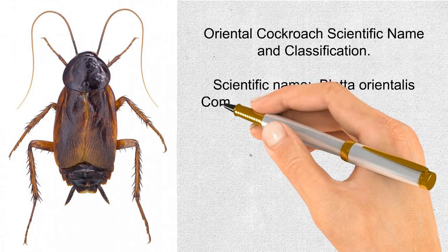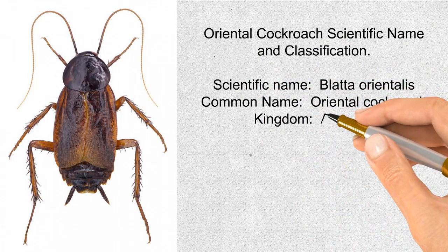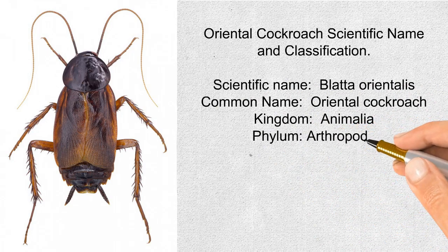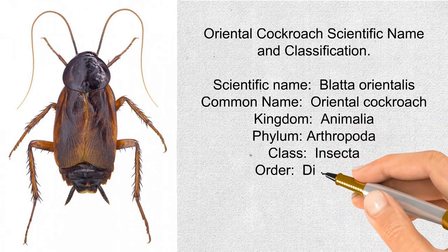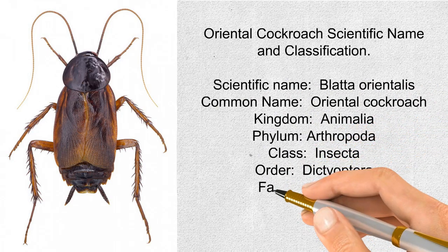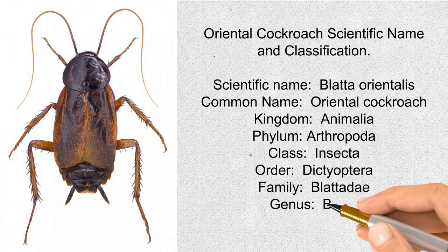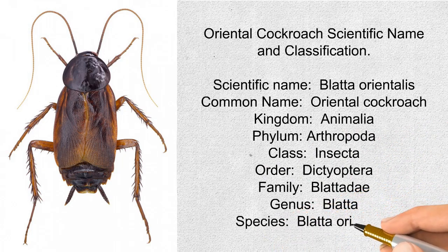Oriental cockroach scientific name and classification: scientific name Blatta orientalis, common name oriental cockroach, kingdom Animalia, phylum Arthropoda, class Insecta, order Dictyoptera, family Blattidae, genus Blatta, species Blatta orientalis.